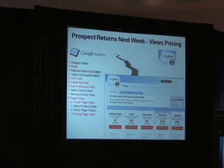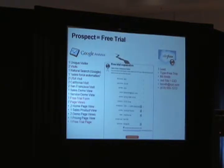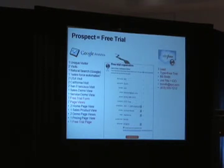Now this guy comes back the next time — we've got another visit. This guy is definitely a little more interested, more qualified. He looked at our pricing page. And then this guy says, you know what, I'm going to fill out a free trial. For the first time ever, our CRM system gets involved. We find out his name is Bill Smith, he's a CIO, and we get two really precious pieces of information: an email address and a phone number.